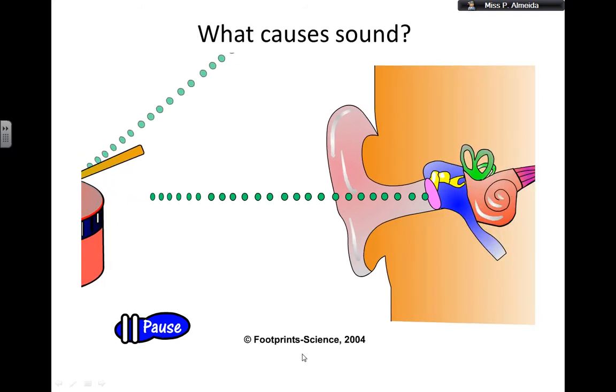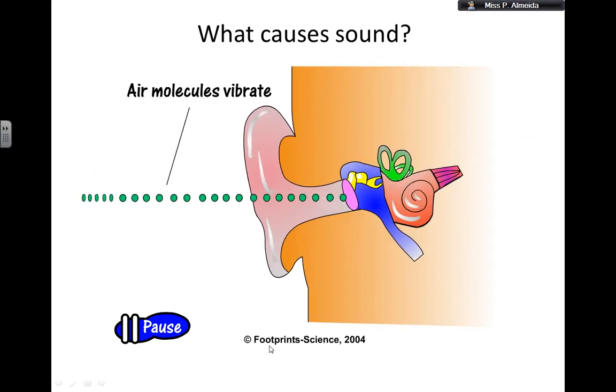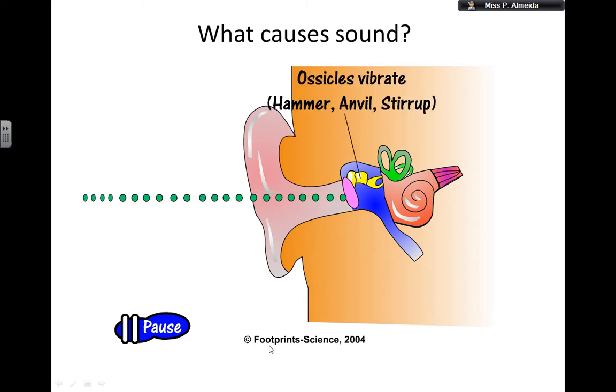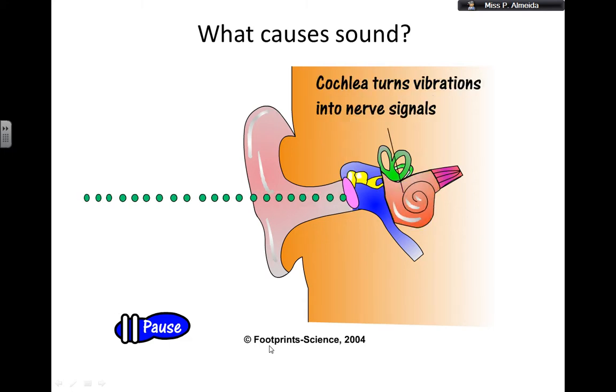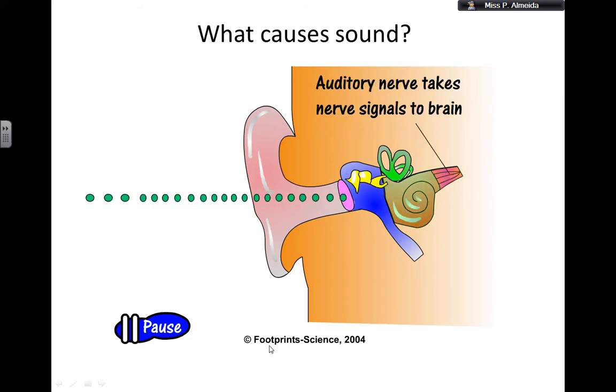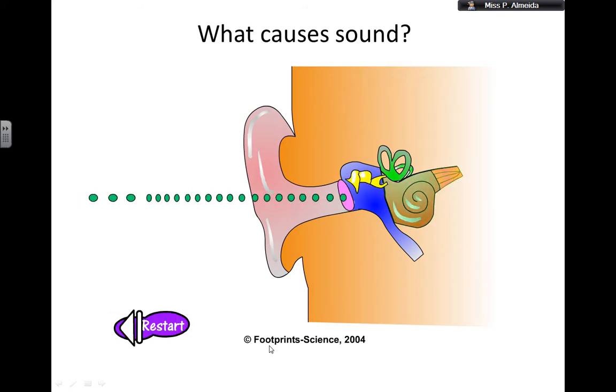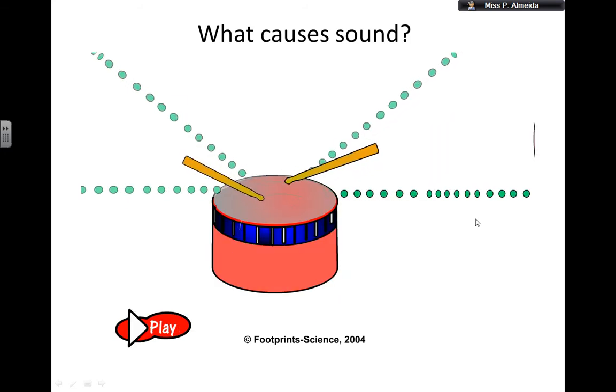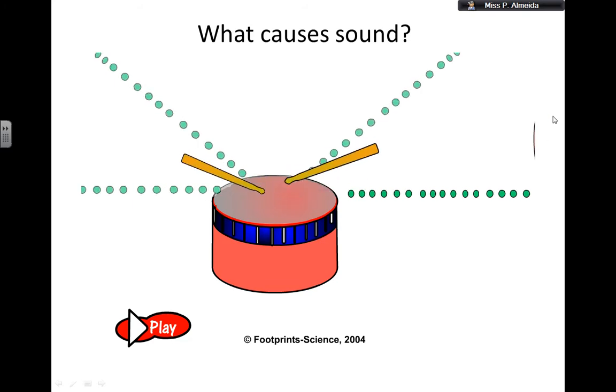I'll replay this animation which is from Footprints, I cannot do animations. Air molecules vibrate, the eardrum vibrates, three small bones in the ear vibrate, and then the cochlea is going to turn the signals so they can be interpreted by the brain. That's how sound is made.